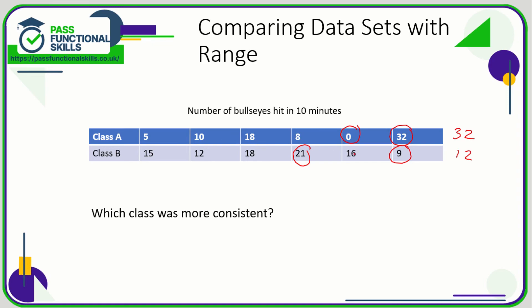Class A were not very consistent — their numbers are all over the place. There's one person amazing at hitting the bullseye and another completely hopeless. Whereas in Class B the numbers are much more consistent, and that's proved by the range being lower. So Class B were more consistent.